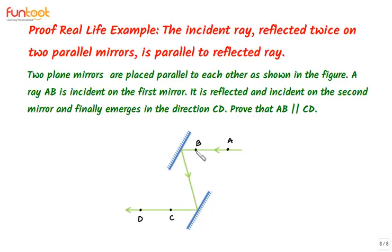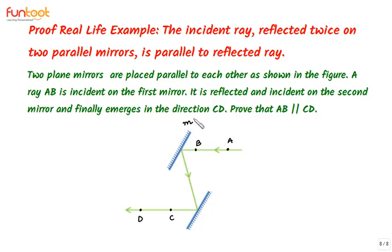We have a ray AB incident on the first mirror, which gets reflected and then strikes the second mirror, and gets reflected along the direction CD. These two mirrors are parallel to each other. What we have to prove is that AB is parallel to CD. We can call the first mirror M and the second mirror N.